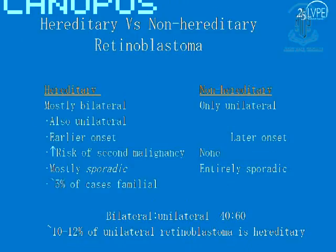How do hereditary and non-hereditary retinoblastoma differ? Hereditary retinoblastoma is mostly bilateral, though it can be unilateral in some cases. It has early onset and a higher risk of second malignancy. It's mostly sporadic, with about 5% of cases being familial. Non-hereditary RB is entirely unilateral, has a relatively later onset, and there's hardly any risk of a second malignancy. The ratio of bilateral to unilateral is 40 to 60, and 10 to 12% of unilateral retinoblastoma has been noted to be hereditary.